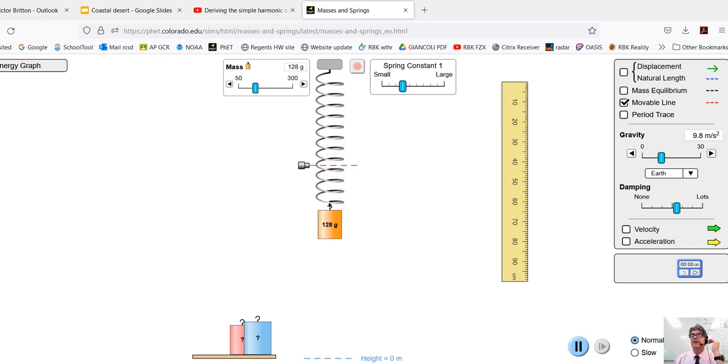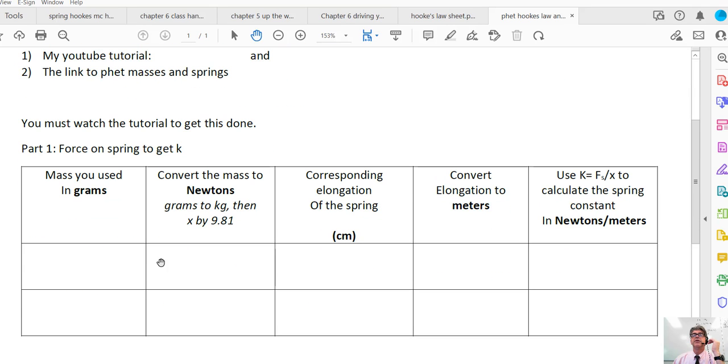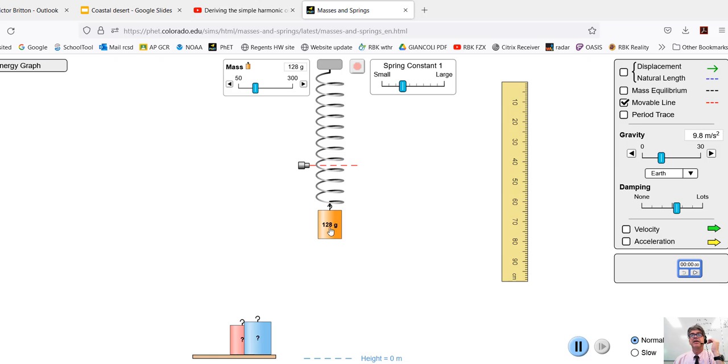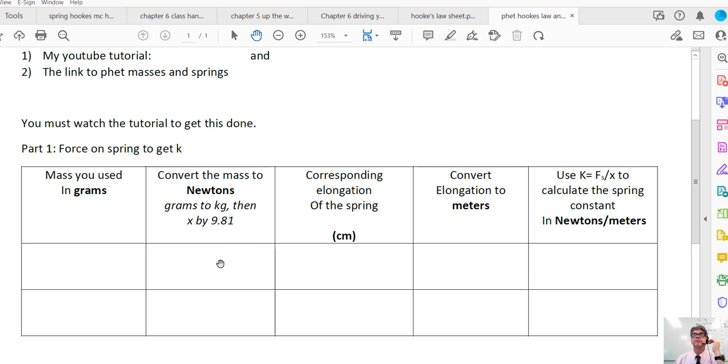This ruler is in centimeters, and when you go to the sheet, the mass that you used, you're going to write that in here. You're going to convert the mass to newtons. That's a two-step process. The grams have to be converted to kilograms, and then you multiply it by 9.81. So for the mass that I used, that would be 0.128 kilograms, and I would multiply that by 9.81 to get it into newtons. You're going to write that number down there for your mass, you're going to measure that in centimeters and write that down with a little virtual ruler, and then convert that centimeter reading to meters.